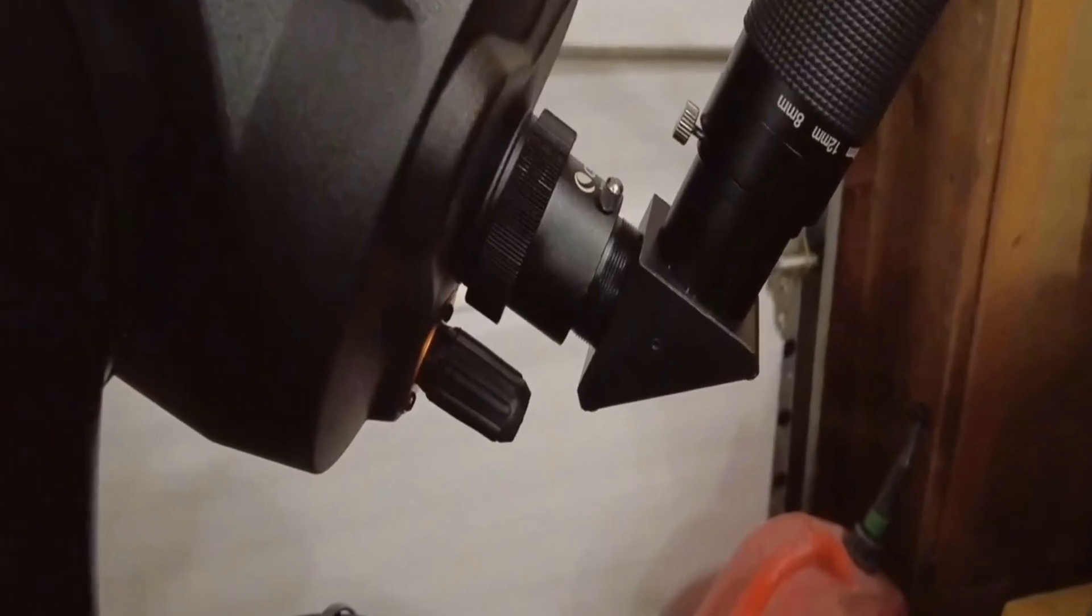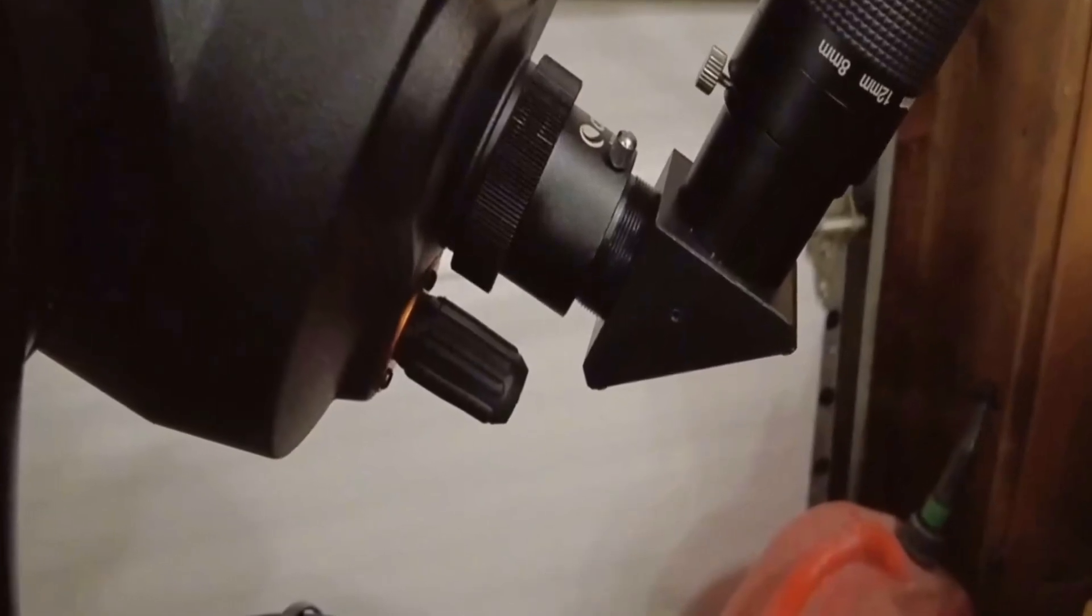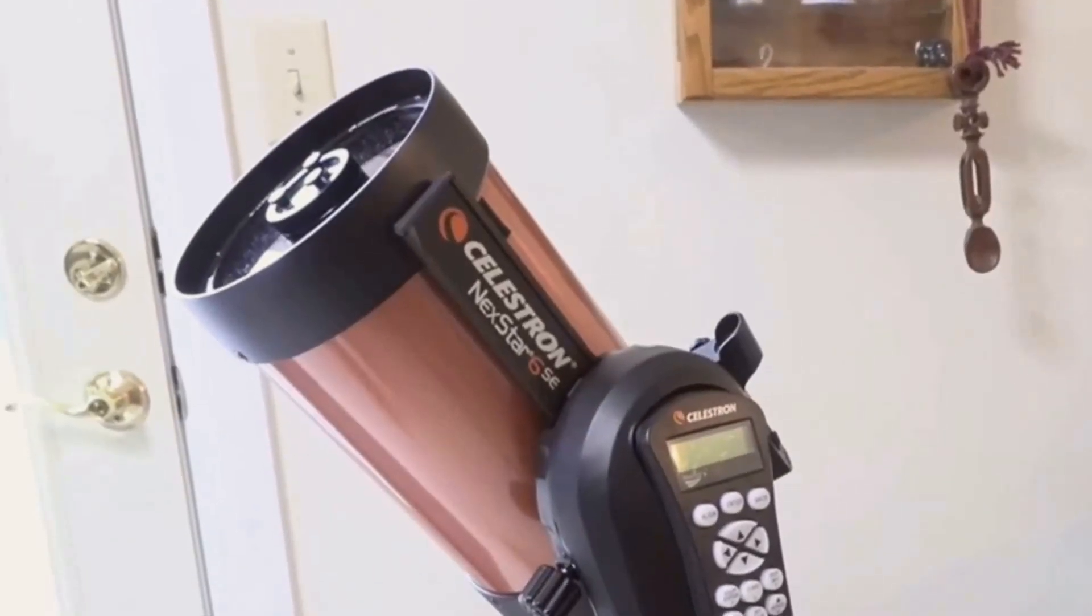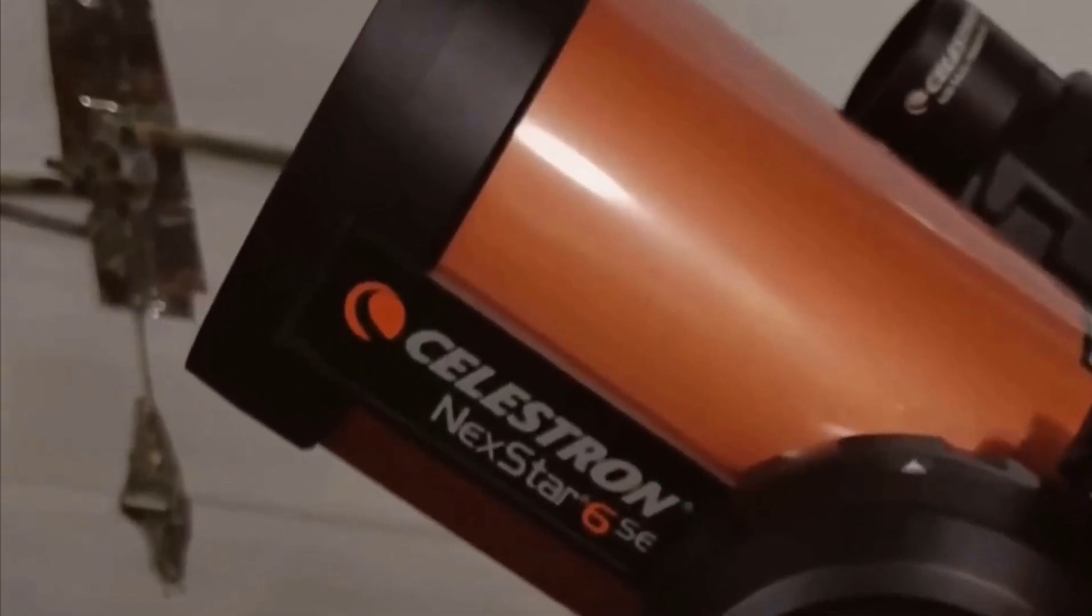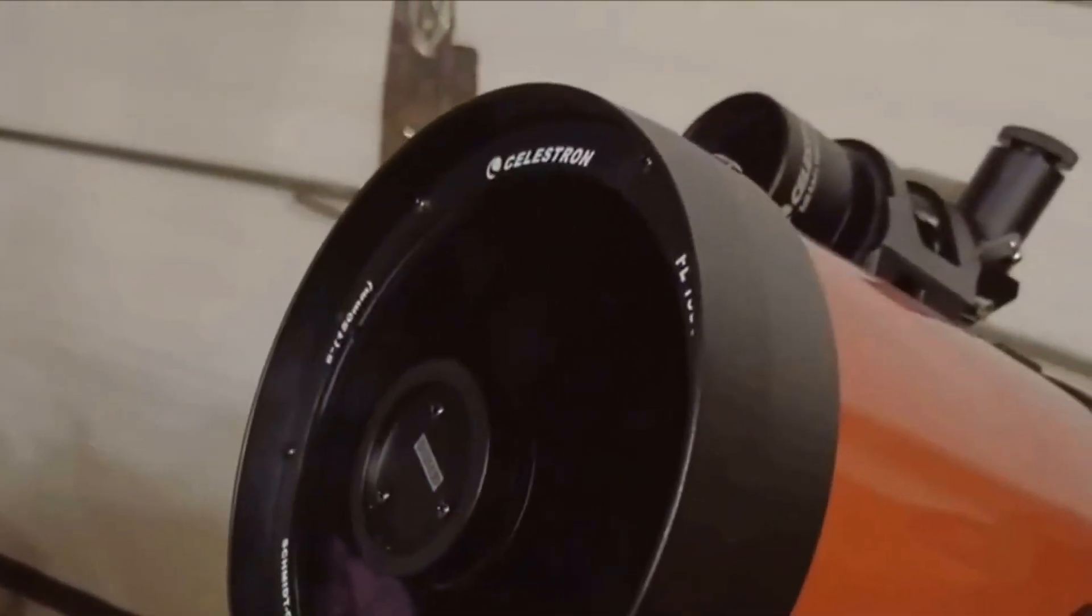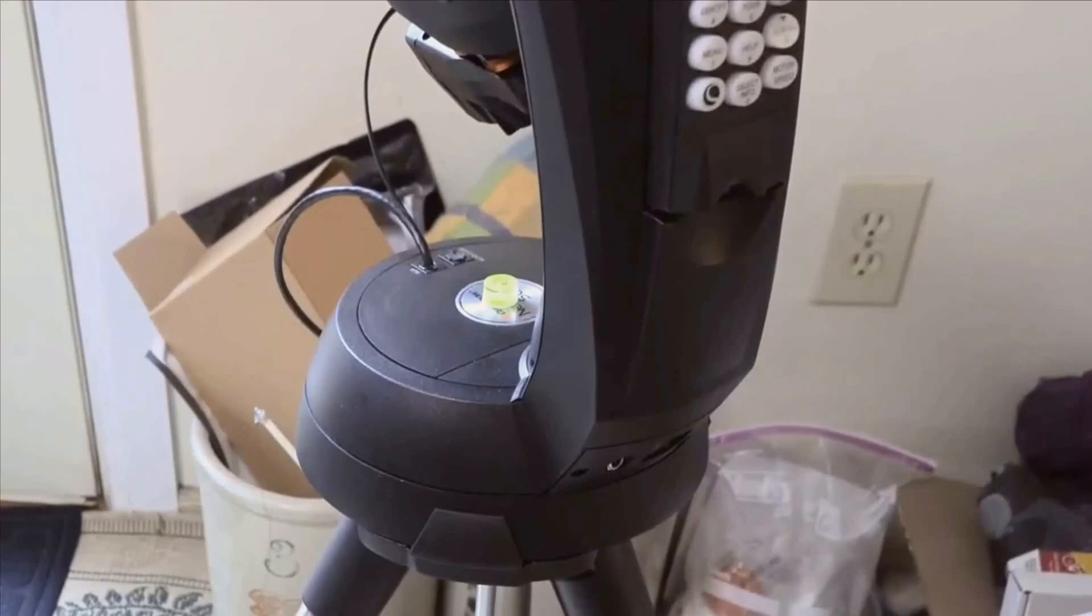After your stargazing session, disassembling and storing the telescope is just as easy. The Nexstar 6SE is compact and portable, weighing around 21 pounds. It's heavy enough to feel sturdy and durable, but light enough to be easily transported and stored. When I handle it, there's a palpable sense of quality and craftsmanship. It feels like a serious piece of equipment and not something flimsy or toy-like.